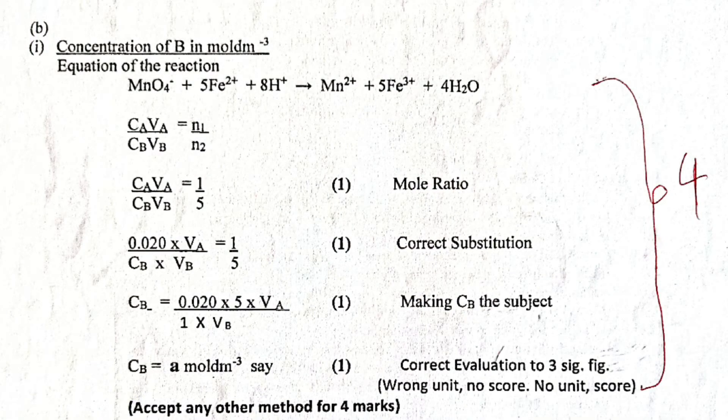Concentration of B in moles per dm³. So we look at the equation there. The equation of reaction must be written. And from the equation of the reaction, we can see that the mole ratio of MnO4⁻ is 1 to that of Fe²⁺, which is 5. So that was ratio 1 to 5. Let's look at how the marks are allocated. One mark is allocated for mole ratio. That is NA or N1 is 1. NB or N2 is 5. That's 1 to 5. You can see the mole ratio. That's 1 mark. 1 mark is allocated to correct substitution.